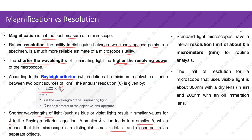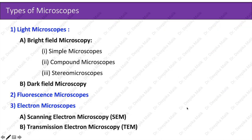Standard light microscopes have a lateral resolution limit of about 0.5 micrometers for routine analysis. The limit of resolution for a microscope that uses visible light is about 300 nanometers with a dry lens in air, and 200 nanometers with an immersion lens.